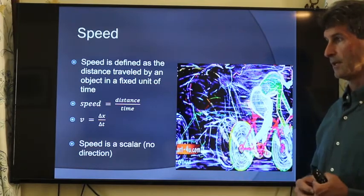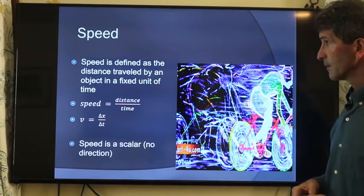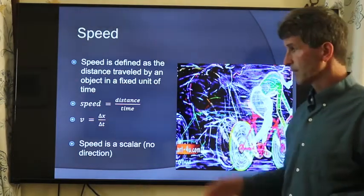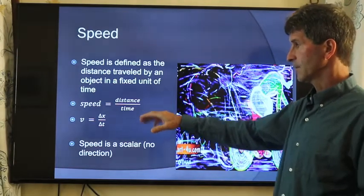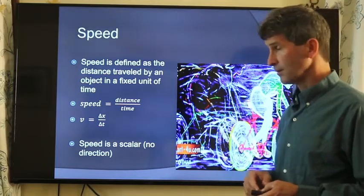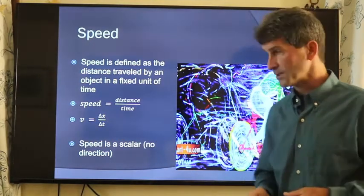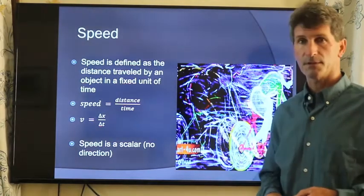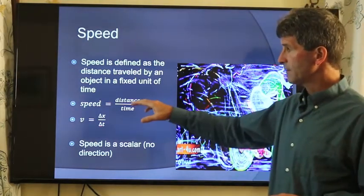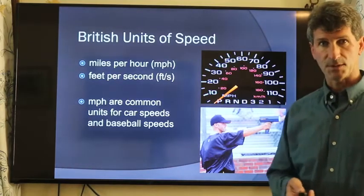If we want to know how quickly our position changes as a function of time, the rate of change in position is known as speed. Speed is distance divided by time. Speed is equal to the change in distance, or the change in position, divided by the change in time. So if we have units of distance in meters, and we divide that by time, the SI unit for time in seconds, we have meters per second as our unit.